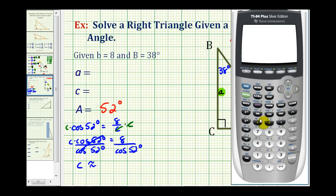So I'll go back to the home screen, and now I want to find this quotient here, eight divided by cosine 52 degrees. So if we round to the nearest tenth, this would be 13.0.